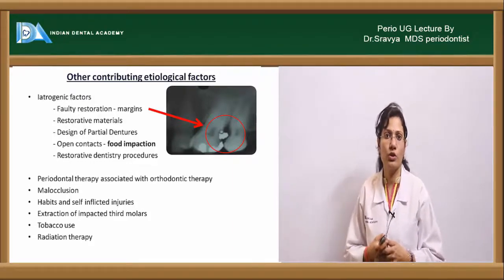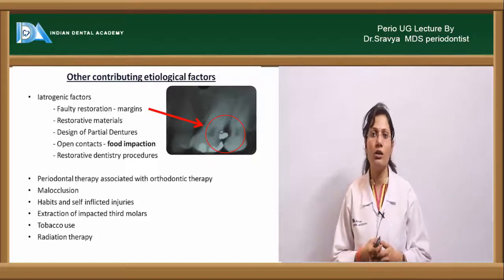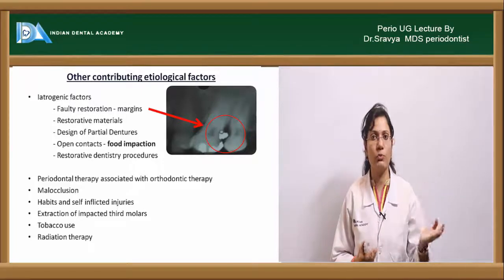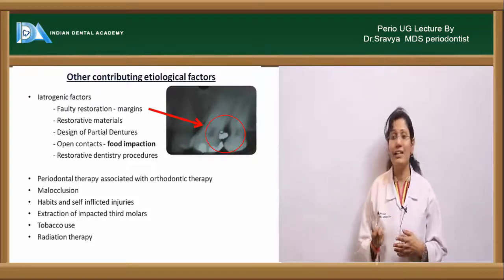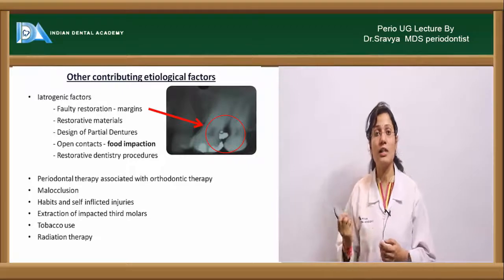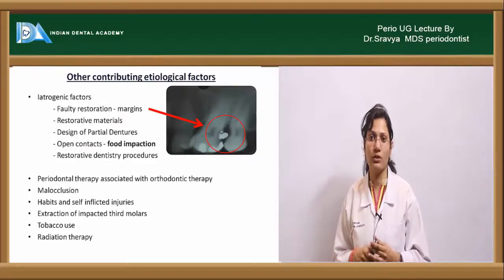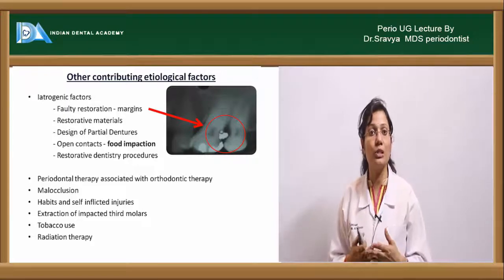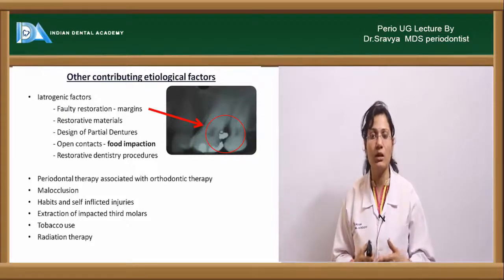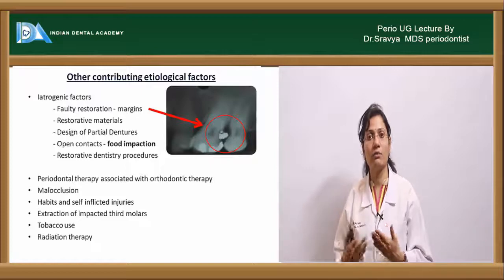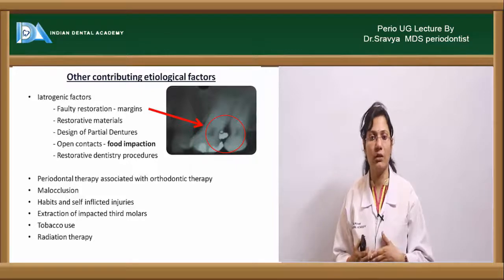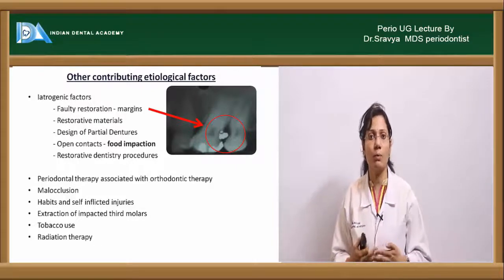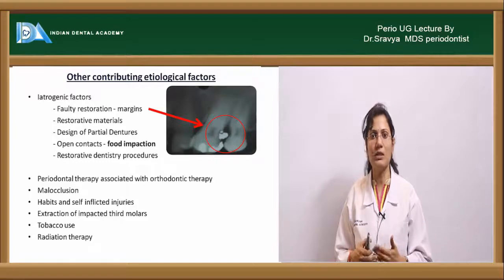Tobacco use is directly related to periodontal disease — the more cigarettes smoked, the greater the prevalence of periodontal problems. Radiation therapy causes side effects including mucositis, xerostomia, and viscous saliva, all of which impair the self-cleansing properties of the oral cavity and lead to further detrimental effects on the periodontium.